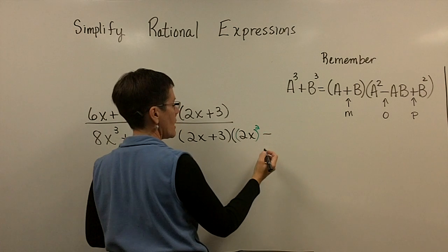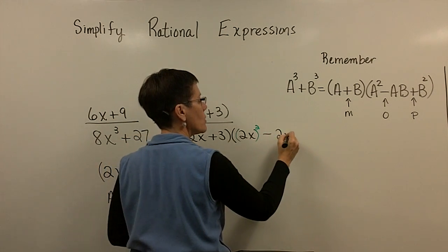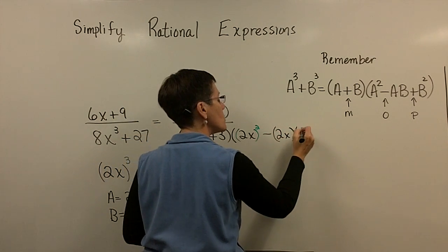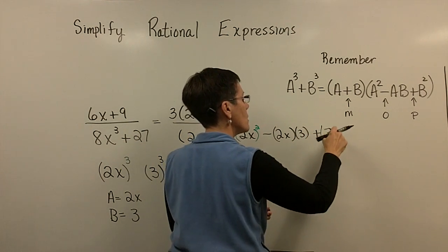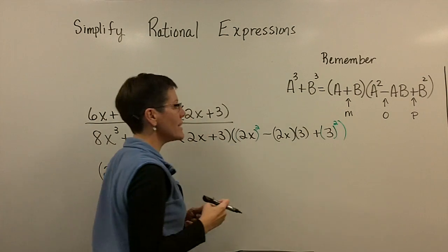And then we have to have an opposite sign here, and we have to take our a value times our b value, which is 3. And then finally, always a plus sign right here, and that's our b value squared, which is going to be 9.